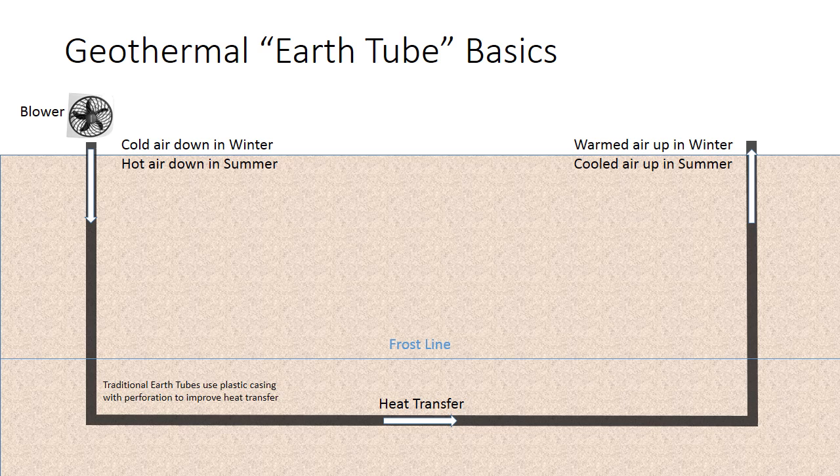The idea is with a blower you send air from the greenhouse down into the earth tube, and that air will have heat transferred from the earth into the air. So you either heat it or cool it and send it back up into the greenhouse. It's a very cheap and effective way of accomplishing this.